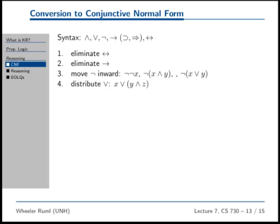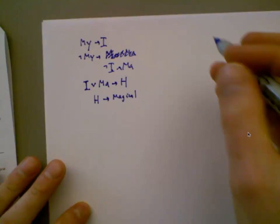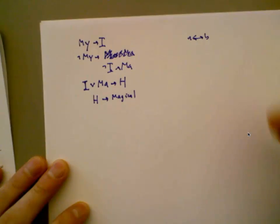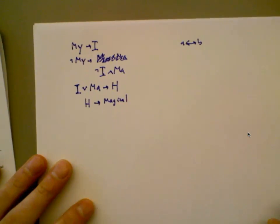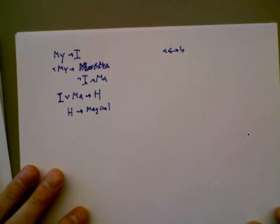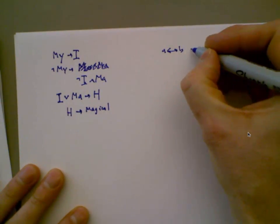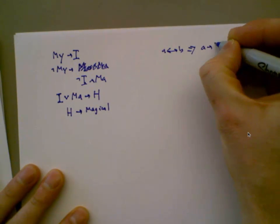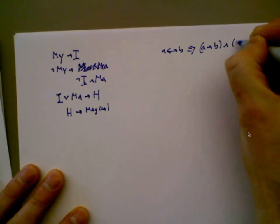The first thing you do is take the fancy stuff and get rid of it. We already talked about how to get rid of biconditionals. So instead of A biconditional, that whole thing rewrites to A implies B and B implies A.